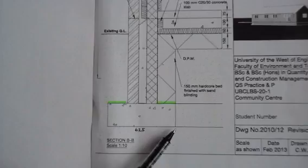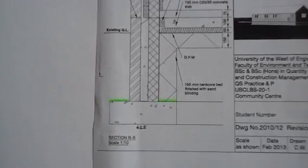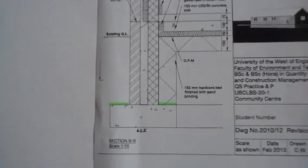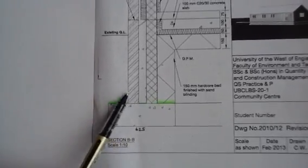By scaling I've established that the width of this foundation is 625. So the first thing I need to do is to establish the total width of the composite wall.